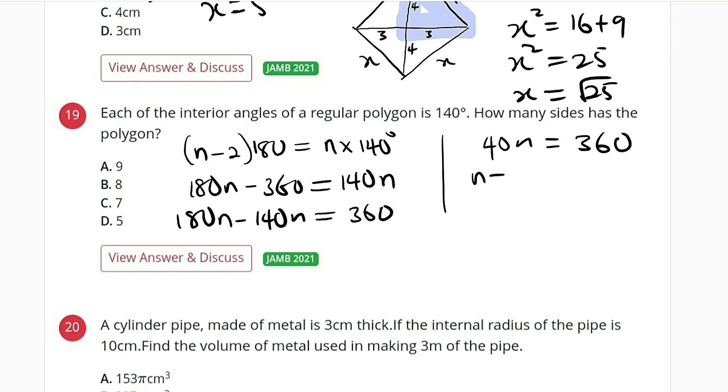Divide both sides by 40. Then n is equal to 360 divided by 40. We have 9.